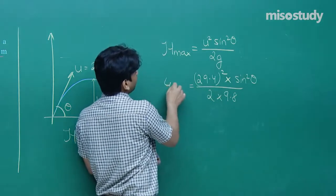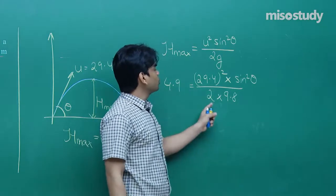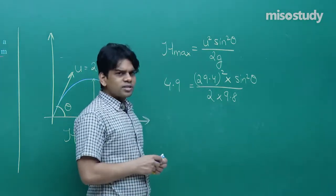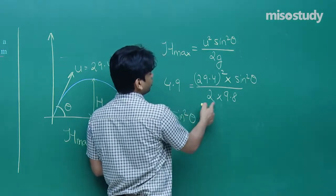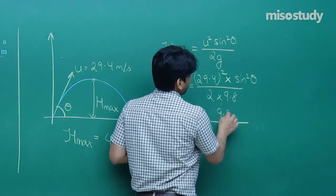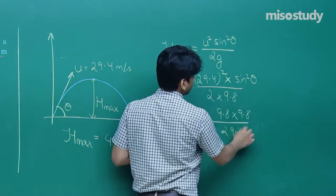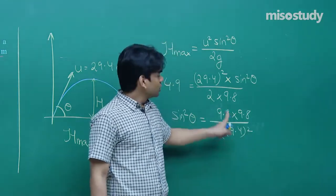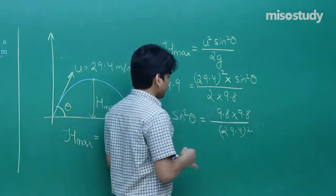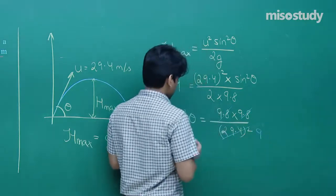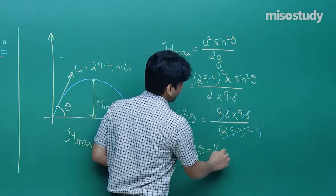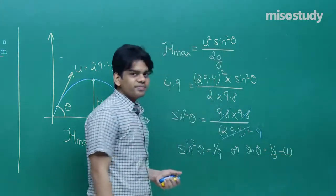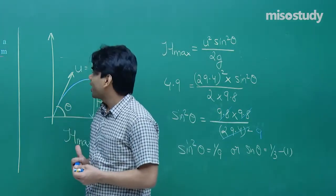Solving for sin²θ: sin²θ = (2 × 4.9 × 9.8) / (29.4)². Simplifying — 9.8 cancels with 29.4 three times — we get sin²θ = 1/9, so sin θ = 1/3. This is equation one. We now have sin θ = 1/3.